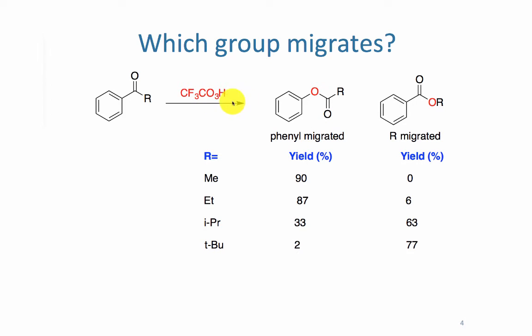We have an oxidant. The first possible product would be if the oxygen is inserted between the phenyl and the carbonyl of the ketone. The other possible product is if the R group migrated, which would place the oxygen between the carbonyl and the R group.